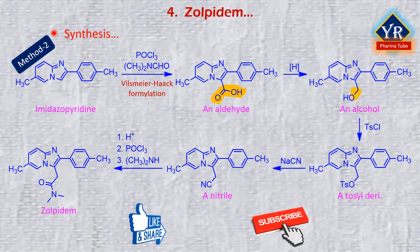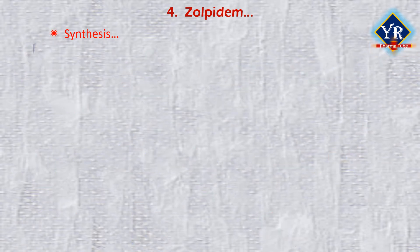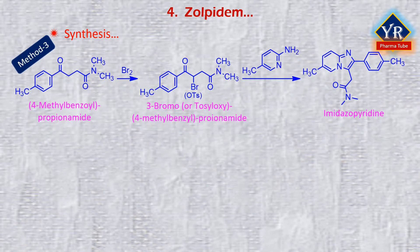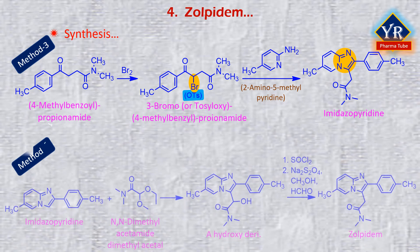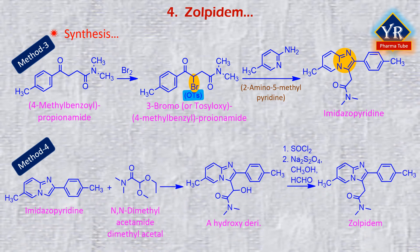An alternative preparation involves Vilsmeier-Haack formylation of imidazopyridine with dimethylformamide and phosphorus oxychloride to produce an aldehyde. Reduction of the aldehyde to the corresponding alcohol, or tosylation and subsequent reaction with sodium cyanide, produces a nitrile. Another method involves bromination or tosyloxylation of 4-methylbenzoylpropionamide followed by cyclization with 2-amino-5-methylpyridine. In another approach, imidazopyridine is reacted with N,N-dimethylacetamide dimethyl acetal to produce a hydroxy derivative, the hydroxyl group of which is removed by chlorination followed by reduction with sodium hydrosulfite to produce zolpidem.